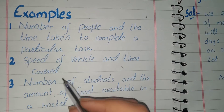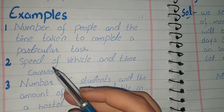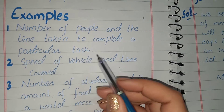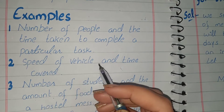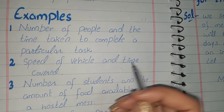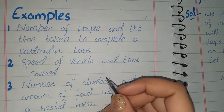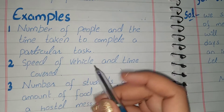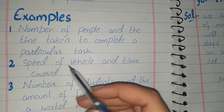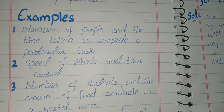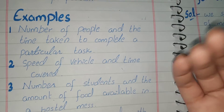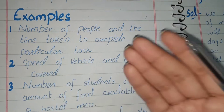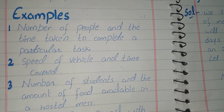Another example is the speed of a vehicle and the time taken. If we increase the speed of the vehicle, the time decreases. If we go slowly, the time increases. These are examples of inverse proportion.